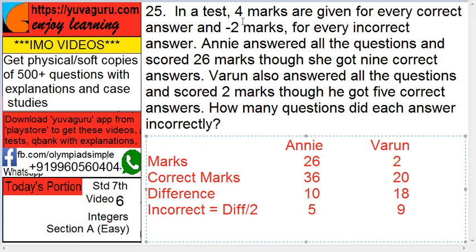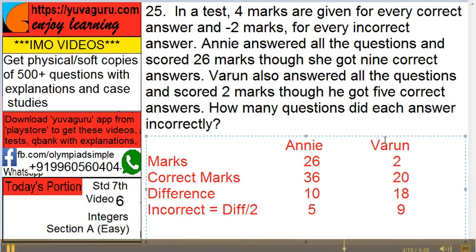So per incorrect answer, 2 marks are gone. So the total number of incorrects will be the difference divided by 2. So 10 ÷ 2 = 5 for Annie, and 18 ÷ 2 = 9 for Varun. So Annie got 5 incorrect answers and Varun got 9 incorrect answers.